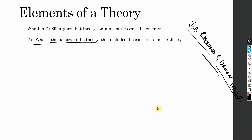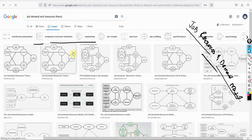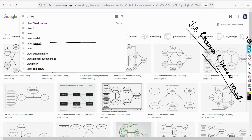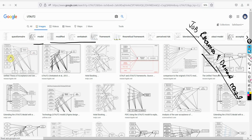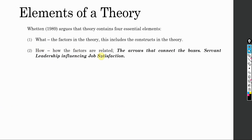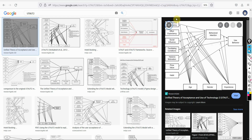Looking at the Job Demands-Resources theory and UTAUT2, these are the factors present in the theory — that is your 'What.' The second element is 'How' — how are these factors related? The arrows connecting the boxes show those relationships: how performance expectancy influences behavioral intention, how effort expectancy influences behavioral intention, how behavioral intention influences use behavior, and so on. So the second element is how these factors are interrelated.